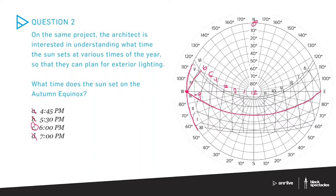These two questions are good examples of how you might be asked to use these diagrams on the actual ARE. The concept of solar time versus clock time is important in practice, but for the exam I wouldn't get wrapped up in adding or subtracting 15 minutes — just read the chart for what it is and answer the question. You can tell this diagram uses solar time because the curves going north-south are perfectly vertical along the north-south axes at solar noon.